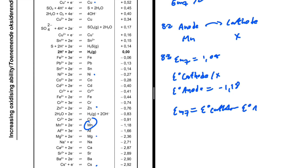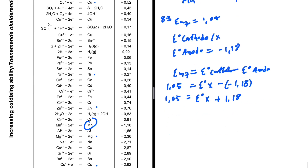The EMF of the cell is given by the reduction potential at the cathode minus the reduction potential at the anode. So: 1.05 = E°(X) − (−1.18), which gives 1.05 = E°(X) + 1.18. Therefore, the reduction potential at X equals 1.05 minus 1.18, giving minus 0.13 volts.